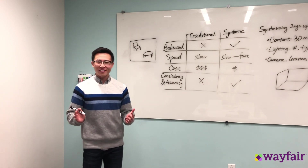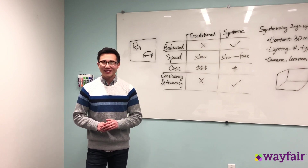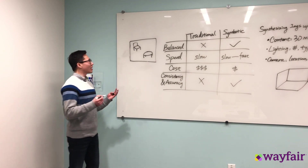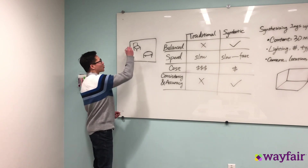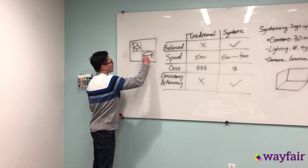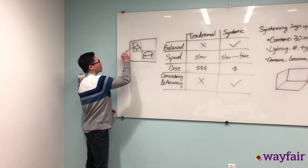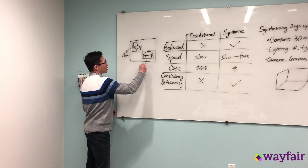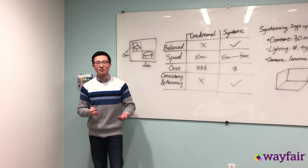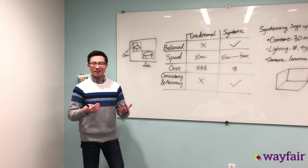As you are probably aware, training deep learning models on various computer vision tasks is a data-hungry project. Take object detection as one example. Given one image, you want to be able to localize what objects are in the image by drawing bounding boxes around them, and you also want to recognize what those objects are by putting labels on them — say, this one is a chair and that one is a table.